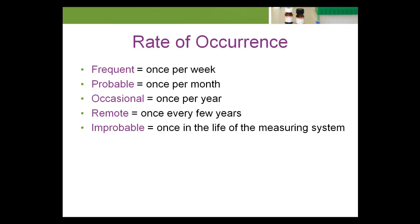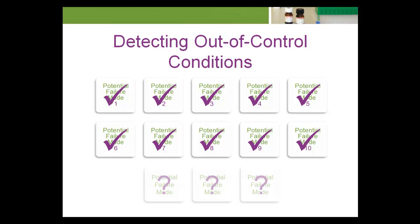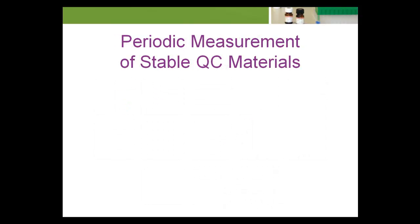The laboratory may identify many potential failure modes in the total testing process that could lead to an out-of-control condition. The lab must then develop a strategy to control the number of incorrect patient results reported. It is advantageous to devise specific control procedures that address each potential failure mode. However, there will always be potential failure modes that are never identified or that cannot be adequately controlled at the point of failure. A lab should strive to minimize the number of out-of-control conditions, but plan for their eventual presence. Statistical quality control procedures based on the periodic measurement of stable QC materials is the approach that has been successfully employed for decades to detect out-of-control conditions.